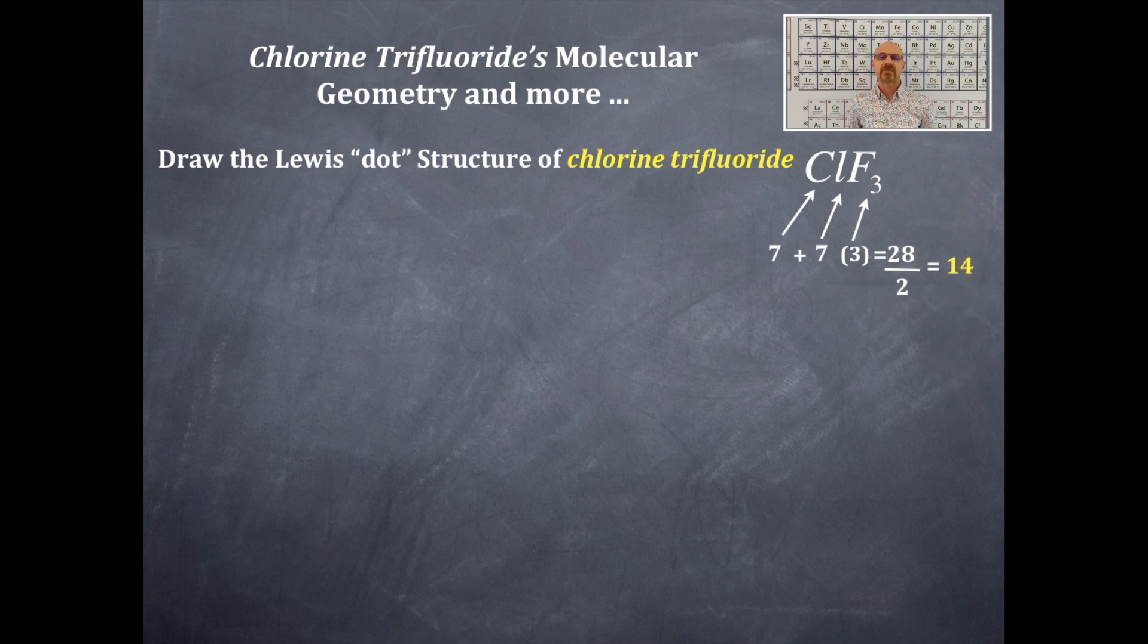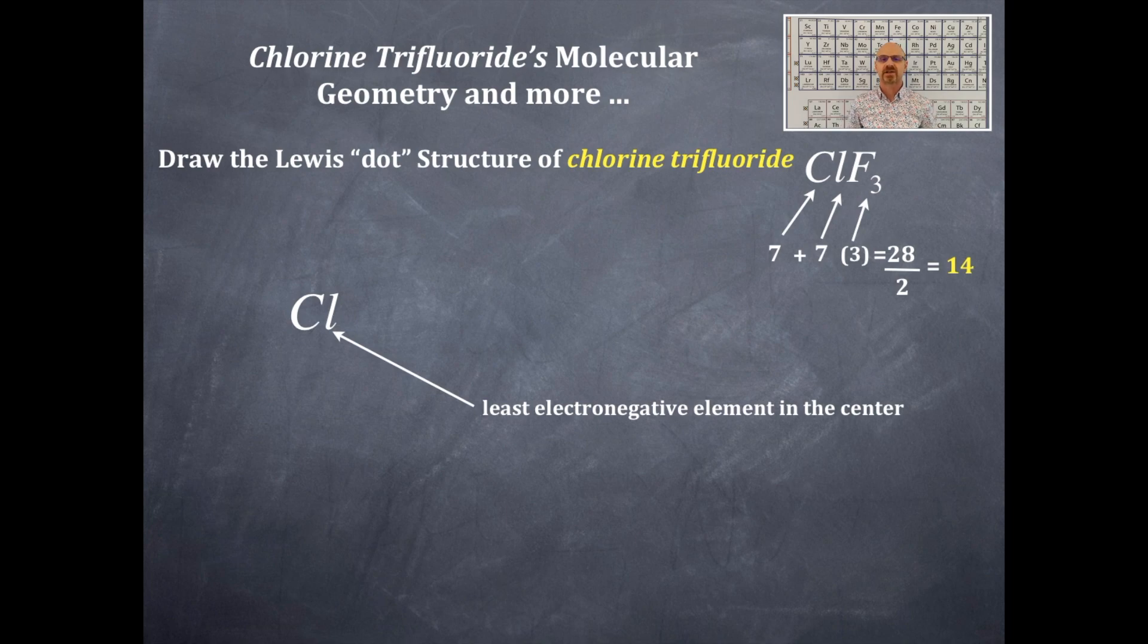Chlorine is the least electronegative element that goes smack in the middle. That's why the chlorine is in the middle and not the fluorine, because fluorine is the most electronegative element there is. Now I'm going to spread those fluorines around the chlorine in the plus mark pattern.